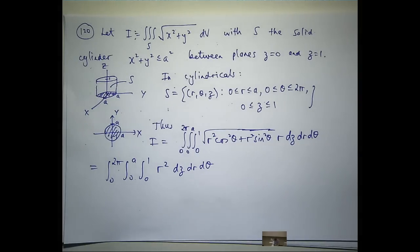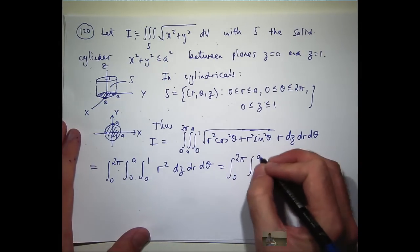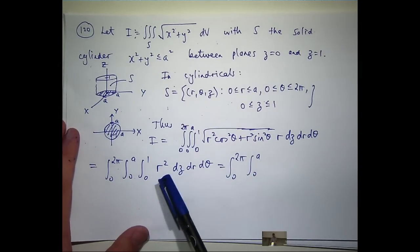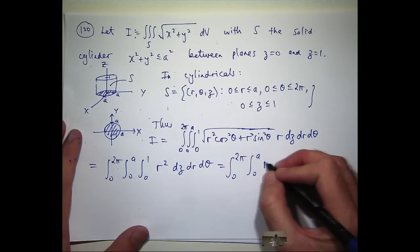I'll integrate r squared with respect to z. Plug in z equals 1 and z equals 0. I'll get r squared.